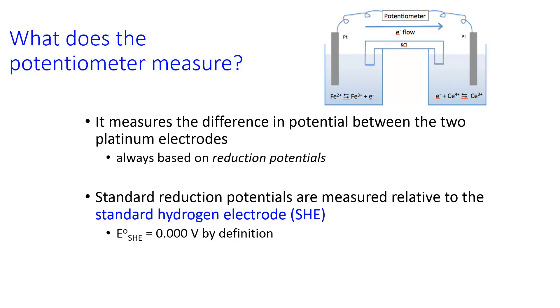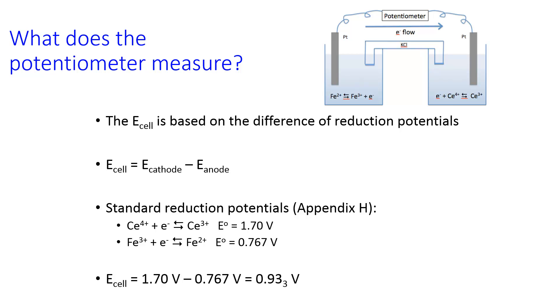The potentiometer is there to measure the difference in potential between the two platinum electrodes, and what this tells you is the reduction potentials, the relative difference between the reduction potentials of the two half-reactions. Standard reduction potentials, which you can look up in a table, are measured relative to the standard hydrogen electrode, which is set to have a reduction potential of zero by definition. The total electrochemical cell potential, E cell, is based on the difference of these reduction potentials, and it's always reduction potential of the cathode half-reaction minus the reduction potential of the anode half-reaction.